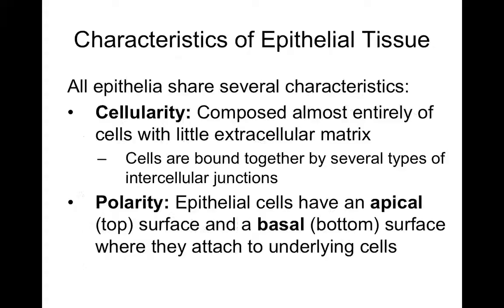We define epithelial tissues as having cellularity — they are comprised of almost entirely cells with very little extracellular material. These cells are bound together by intercellular junctions. You don't find an epithelial tissue where cells are just loosely floating around. In skin, if the cells weren't tightly held together, every time you picked at your skin it would just tear away. But these cells are so tightly interlinked that together they form a really tough barrier.